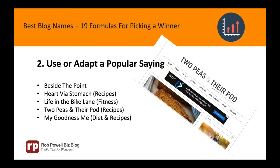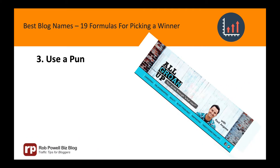Formula 3: Use a pun. A pun is a play on words that exploits the different possible meanings of a word, or the fact that there are words which sound alike but have different meanings. The reader pauses for a fraction of a second while they figure out what the word should have been. It's another way to be memorable. Here are some examples.